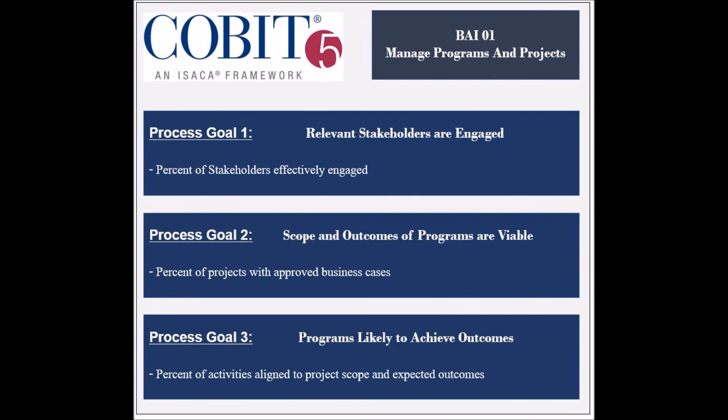The process has six process goals. The first goal is to ensure that the relevant stakeholders are engaged in the IT programs, and its achievement is measured by the percent of stakeholders effectively engaged. The second goal is to ensure that the scope and outcomes of the IT projects are viable, and its achievement is measured by the percent of projects with approved business cases.